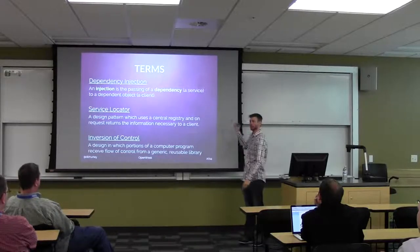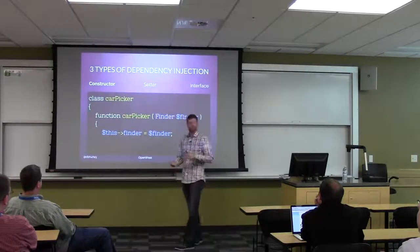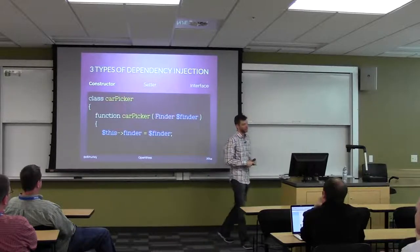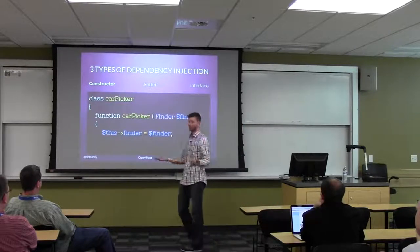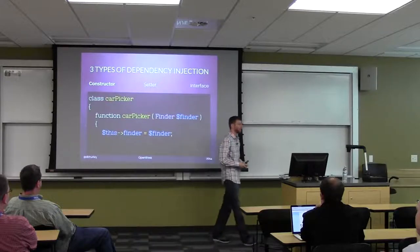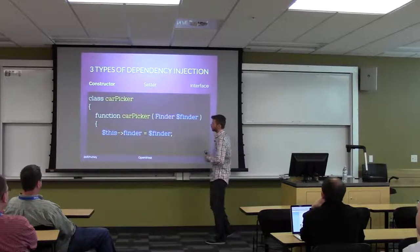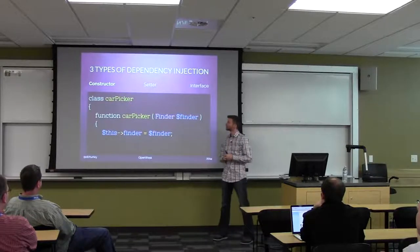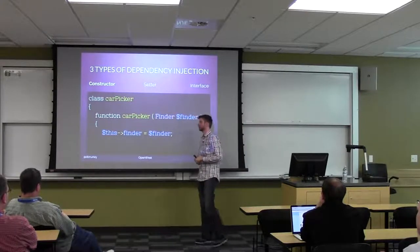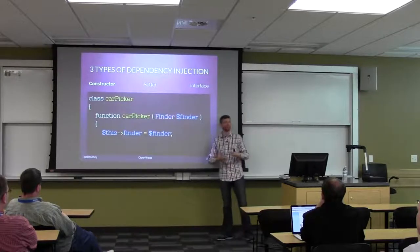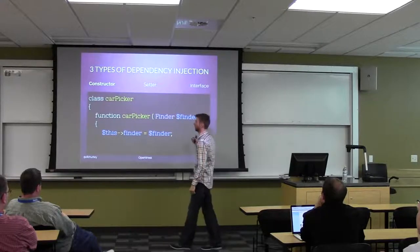There are in essence three types of dependency injection. I'm only going to touch on one today because I don't want to get too technical and make it a confusing mess. The one I wanted to look at is constructor dependency injection, which is typically your most common one. Basically, with this example, we have a class defined as a car picker, and we have a function for a car picker. We need to pass in dependencies into that function rather than making a static or singleton call within the function itself.